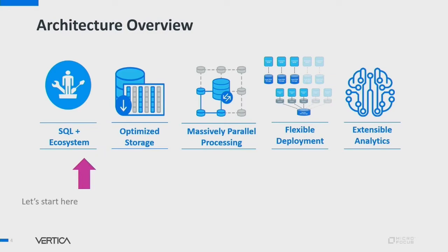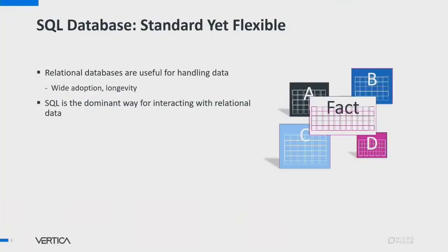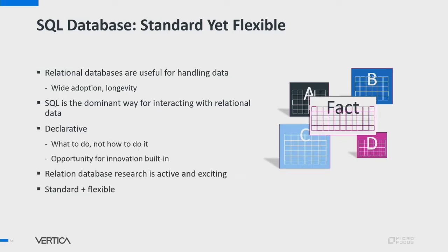I'm going to start with the choice to make Vertica a relational database supporting the SQL ecosystem. Vertica stores its data in tables. Relational databases have proven themselves to be a useful way of handling data — you can tell because they have wide adoption and have been around for quite some time. SQL is the dominant way for interacting with relational databases. A key feature of SQL is that it's a declarative language — you specify what you want to do, but not how to do it. That gives us an opportunity to tune and adjust how we answer a query in a highly performant way.